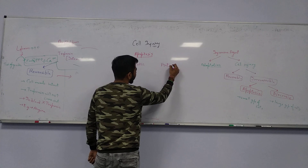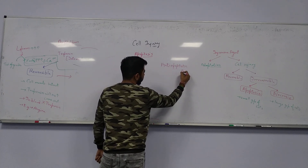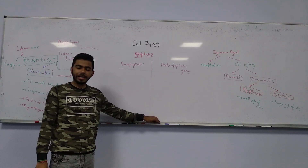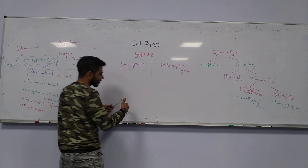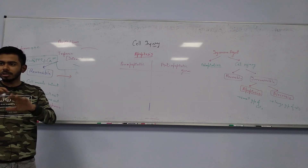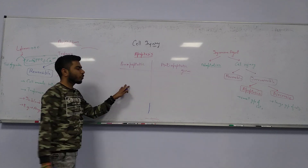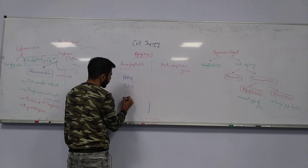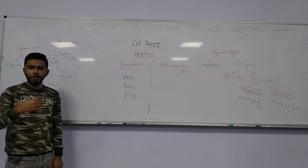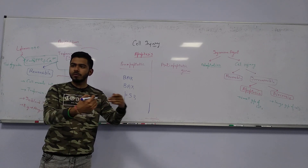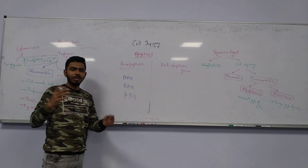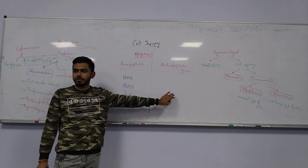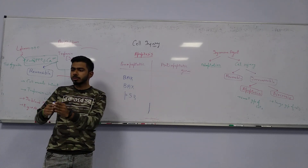The pro-apoptotic genes — the examples are BAK, BAX, and p53. These genes will be stimulating the cell to go for apoptosis. On the other side, we have anti-apoptotic genes which resist apoptosis. These anti-apoptotic genes can lead to cancer because if apoptosis cannot happen, cells start increasing inside your body.